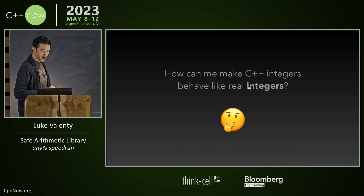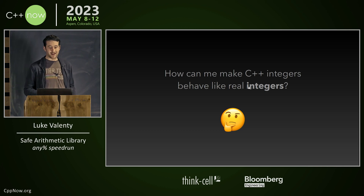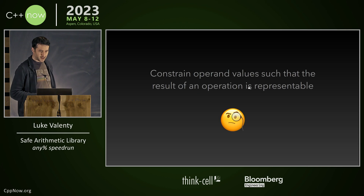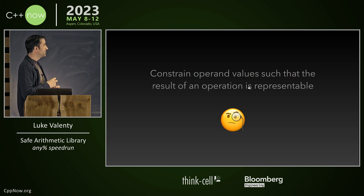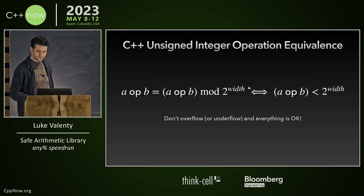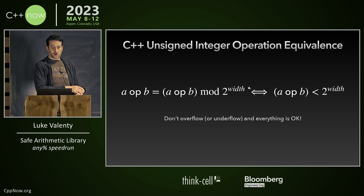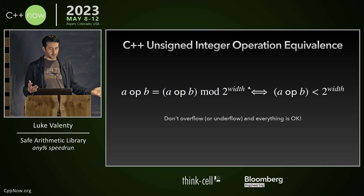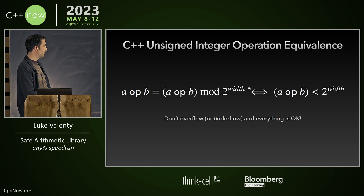So how can we make C++ integers behave like real integers? What we need are preconditions. We can constrain operand values such that the result of an operation is representable. As long as the result of your operation can be represented by your type, then it looks like a real regular integer, and you have real math.